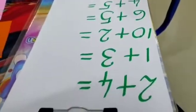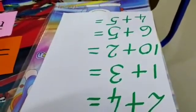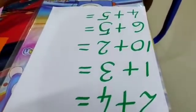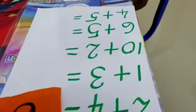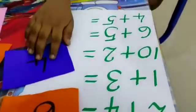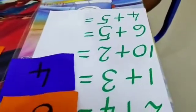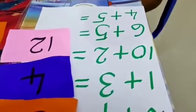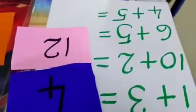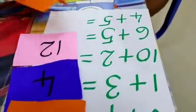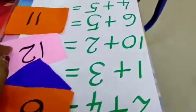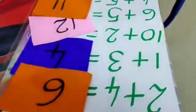Roshan is going to do an additional activity. Roshan, what is the answer of 2 plus 4? 2 plus 4: 6. What is the answer of 1 plus 3? 1 plus 3: 4. Then what is the answer of 10 plus 2? 12. Then what is the answer of 6 plus 5? 9. 6 plus 5: 11. Then what is the answer of 4 plus 5? 9.